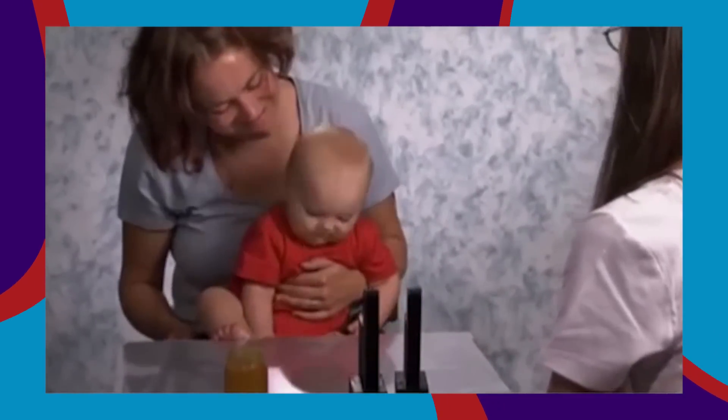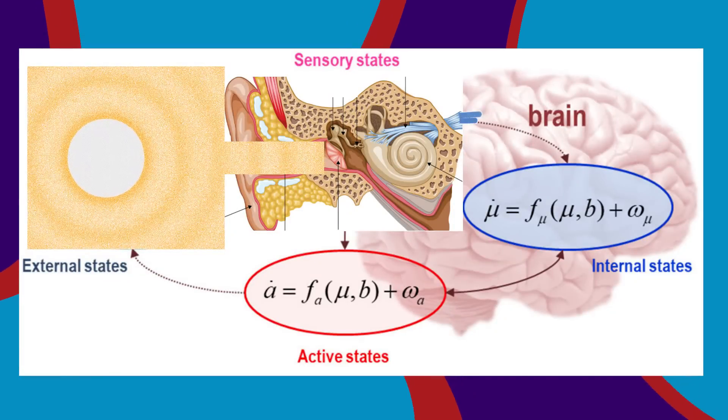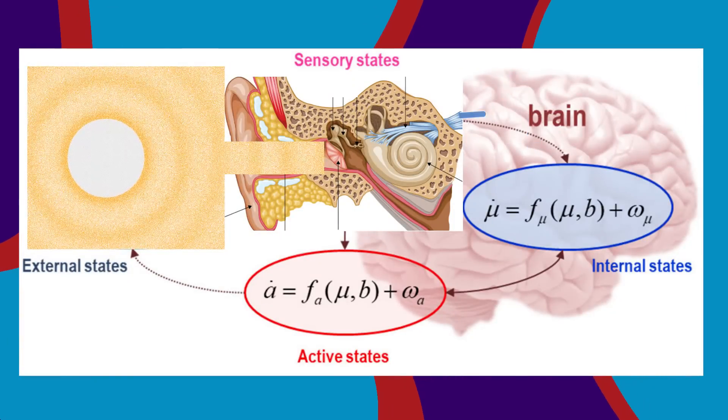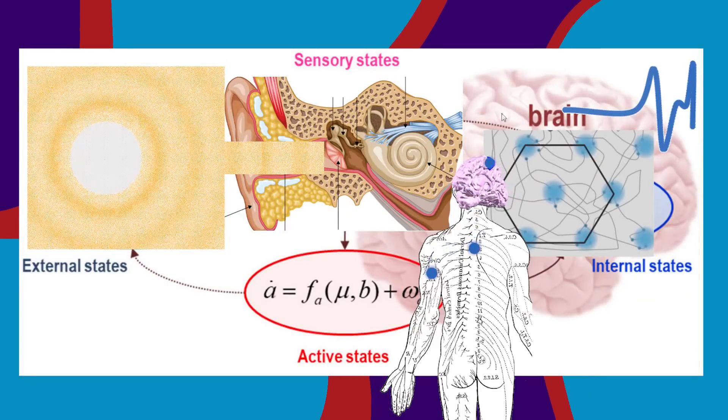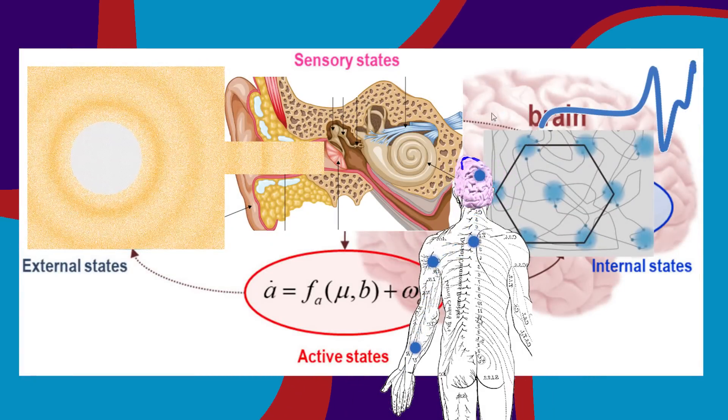You get sensory input in the form of light waves and sound waves, and you transduce them into electrical impulses to build mental maps of the world around you. Then you send motor signals, also in the form of electrical impulses, to move around that world.